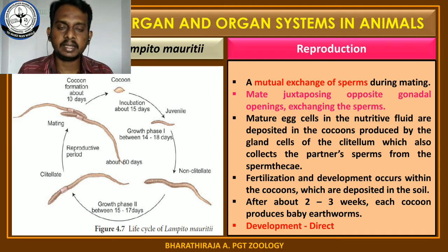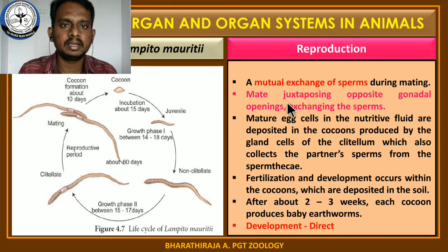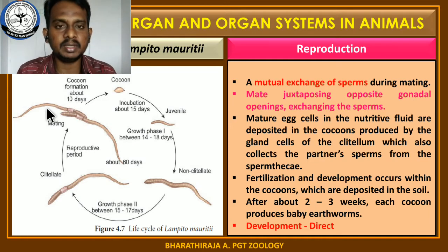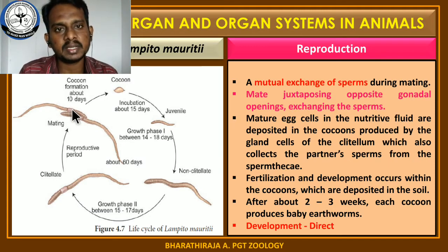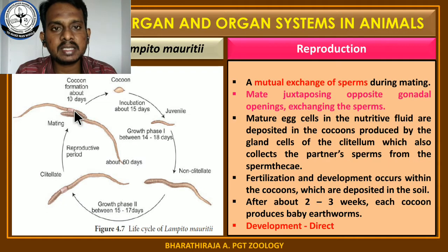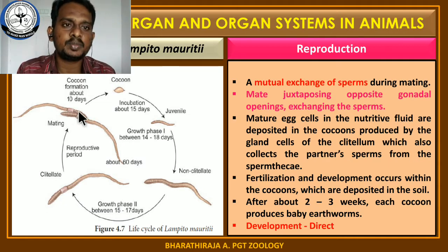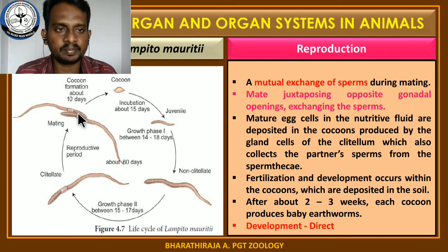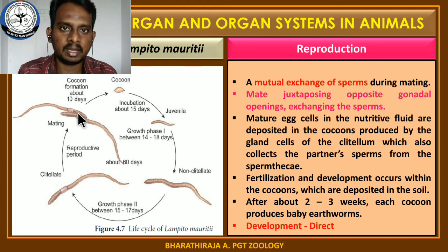The second step in reproduction is cocoon formation. Mating is the first process and fertilization is the second. Now worm B has received the sperm from worm A. The clitellum is the main part responsible for the formation of a cocoon. Some fluids are secreted in the space between the clitellum and the skin, and this nutritive fluid contains mature egg cells.